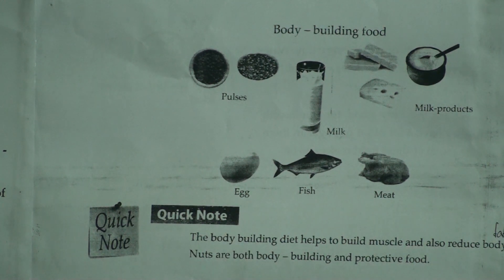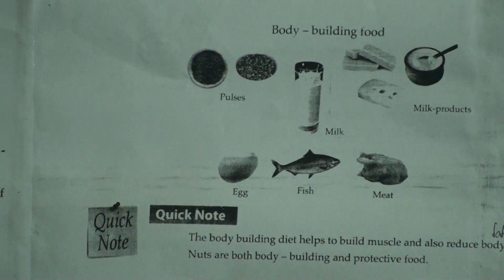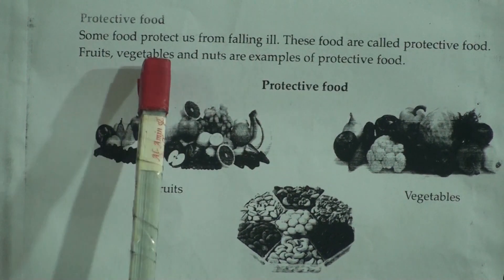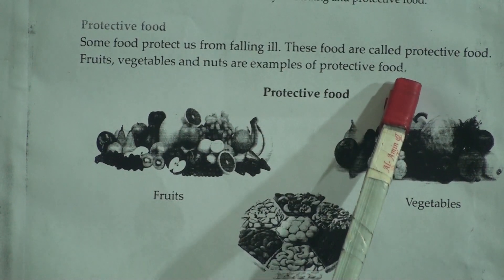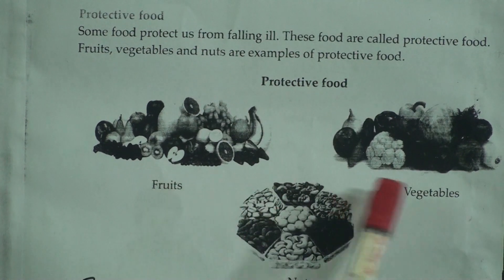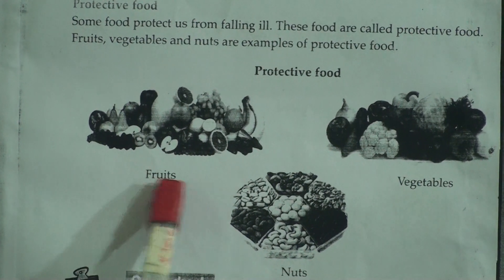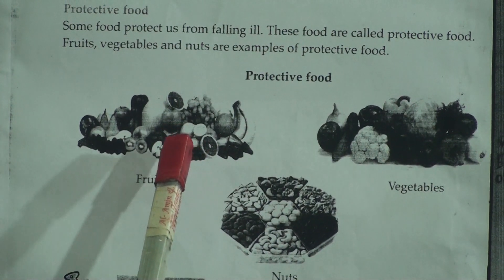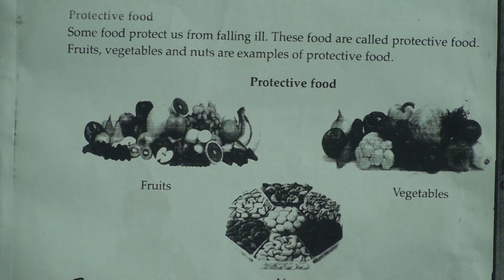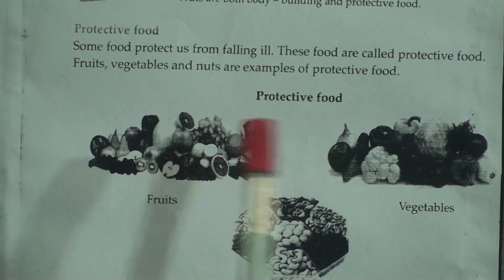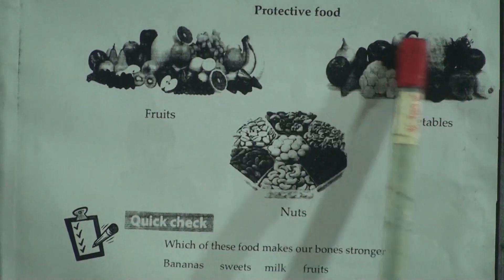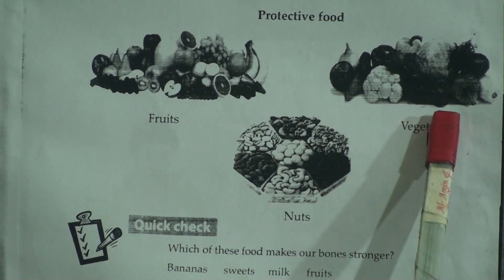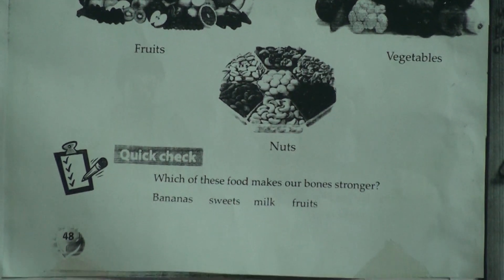Protective food — some food protects us from falling ill, and these foods are called protective food. Fruits, vegetables, and nuts are examples of protective food. In picture number one, we find different kinds of fruits like mango, banana, jackfruit, apple, lychee, grapes, and more. In picture number two, there are lots of vegetables like cauliflower, green vegetables, potato, carrot, etc. And here is the picture of different kinds of nuts.